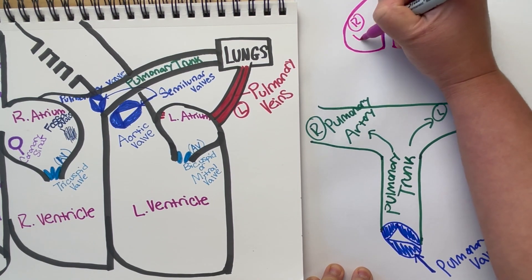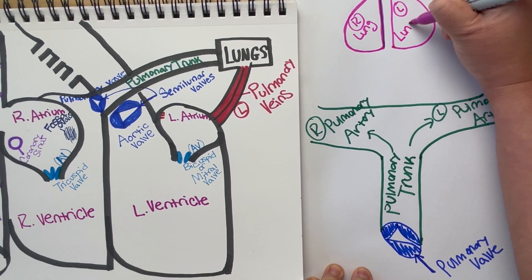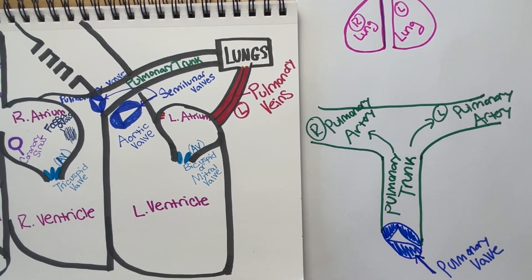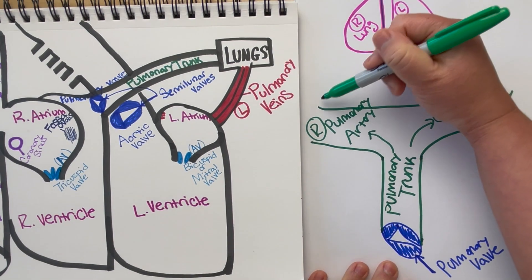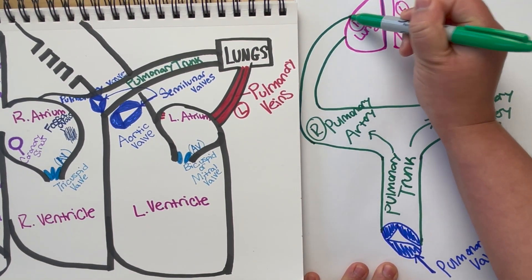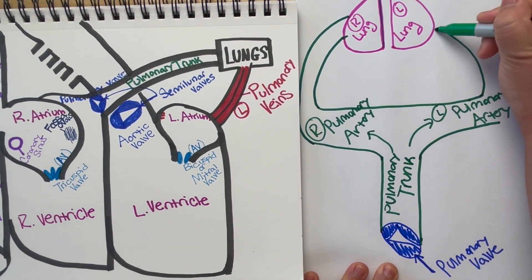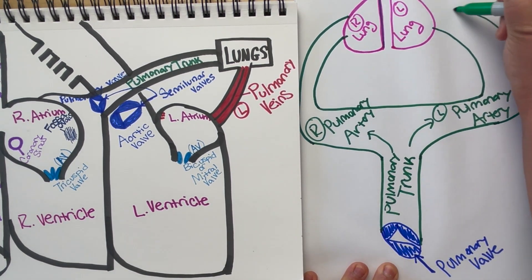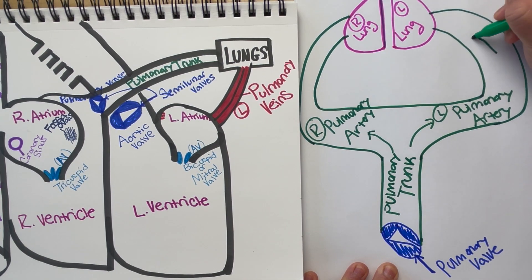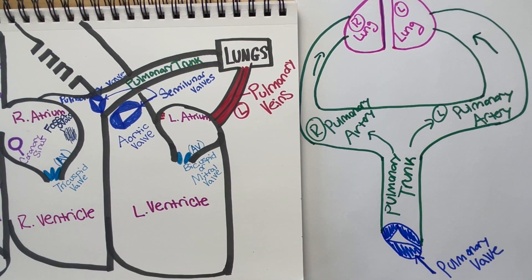Remember that this blood is deoxygenated — it has very low oxygen — and it's going to the lungs to pick up oxygen and also exchange and drop off CO2. That's another thing the circulatory system does: it drops off CO2 in our lungs so they can exhale it and get rid of it, because we don't want too much CO2 in our body. In exchange, it takes up the oxygen that we do need.